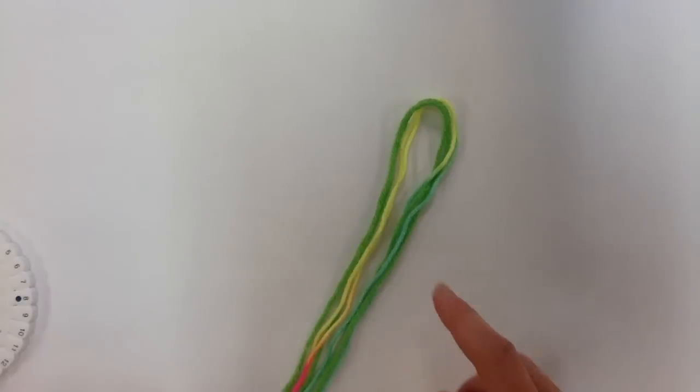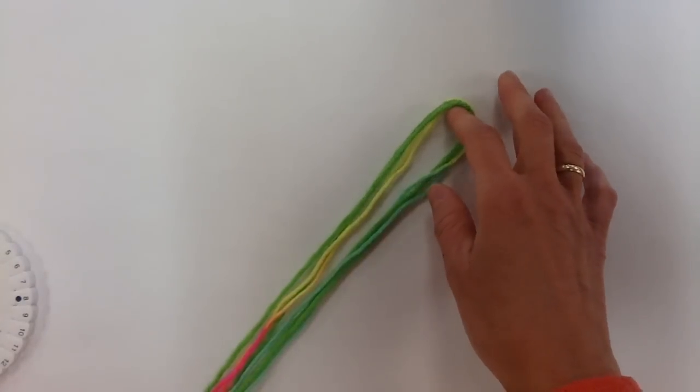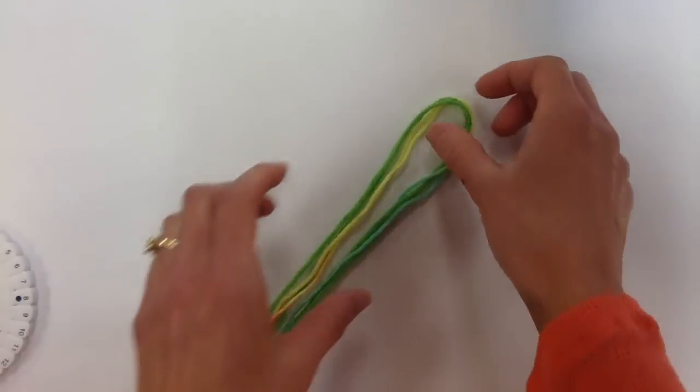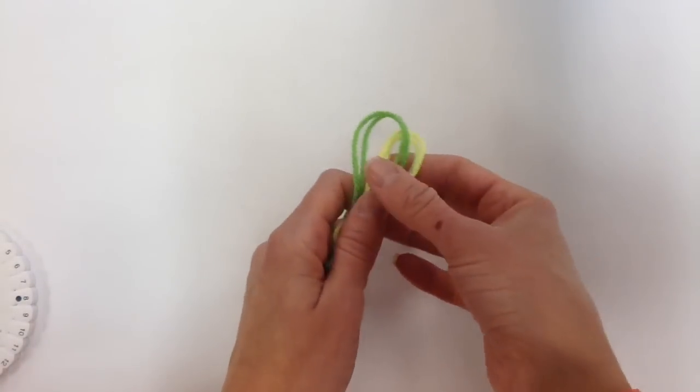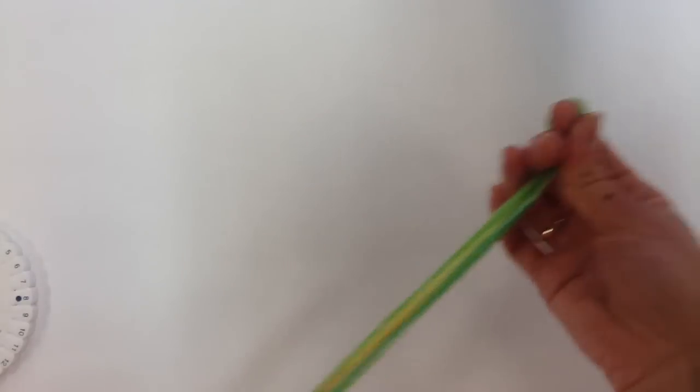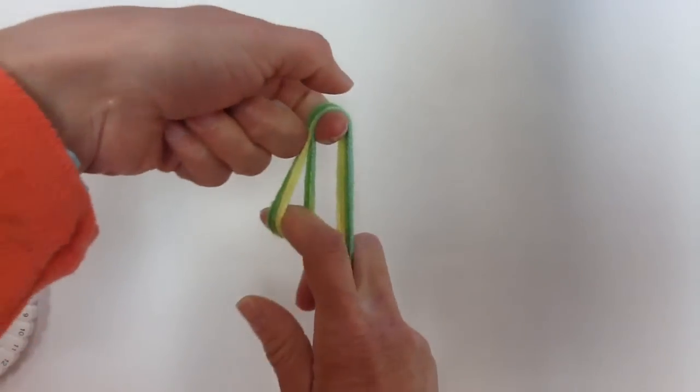The next step is to take my four strands together and fold them so they're equally in half. So here's where my fold is. I've got my pieces folded in half.